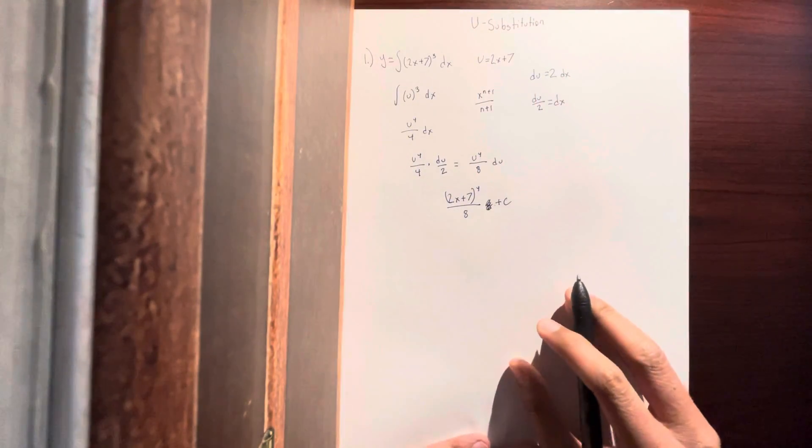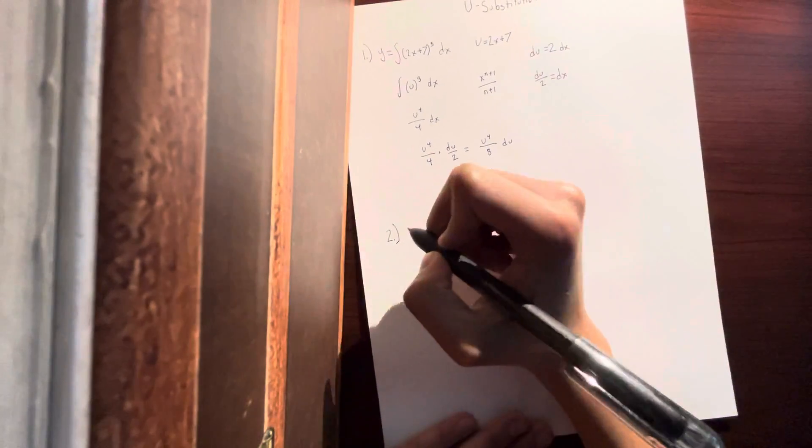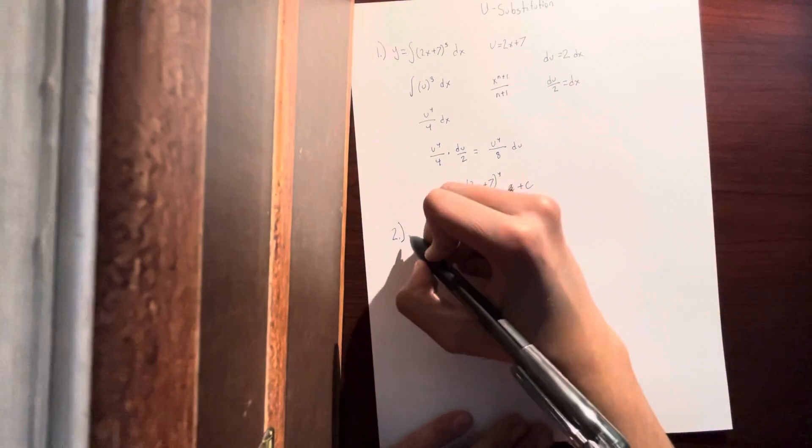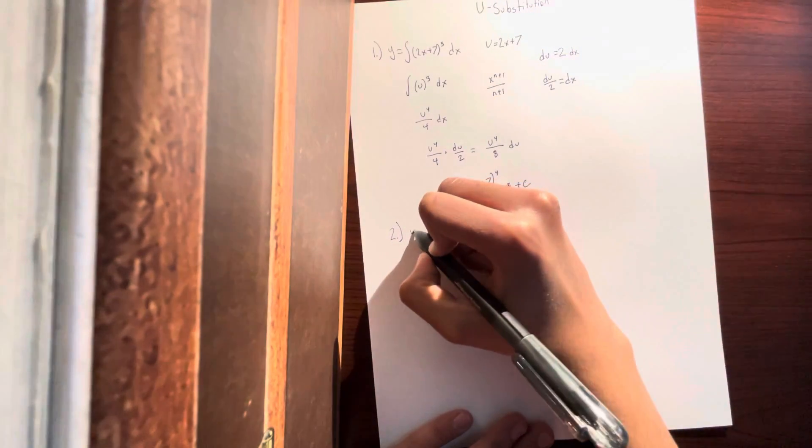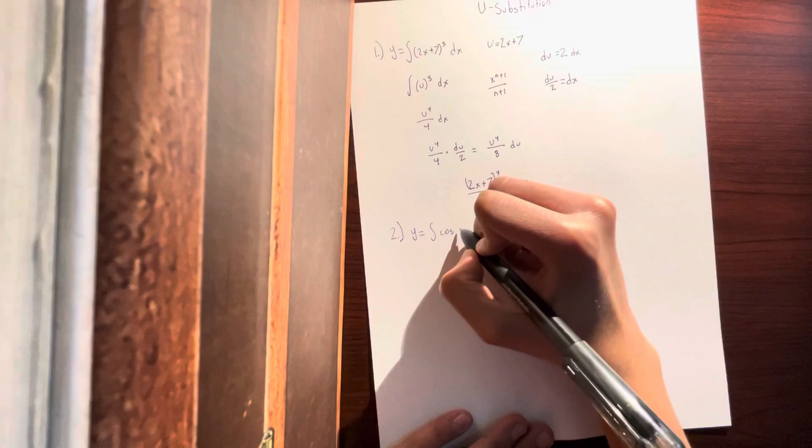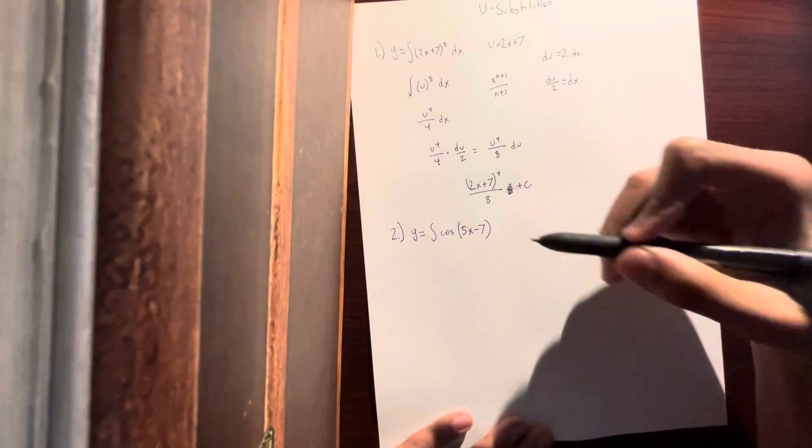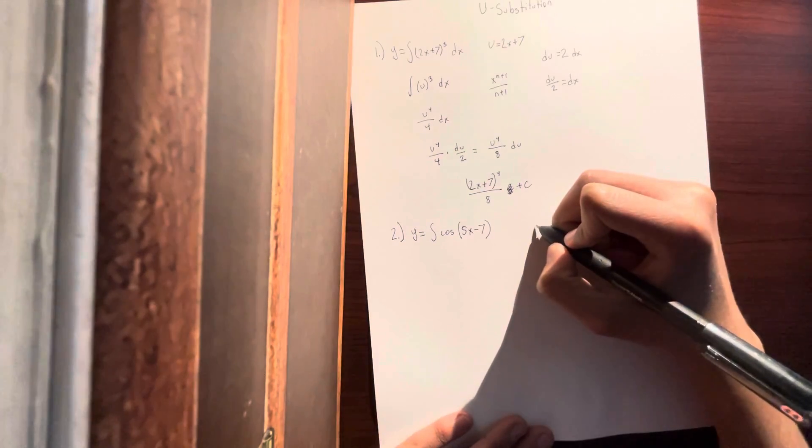So let's do another problem like this. Problem 2 is y equals the integral of cos(5x - 7) dx. So let's make 5x - 7 equal to u.